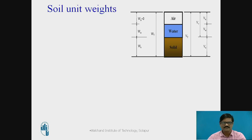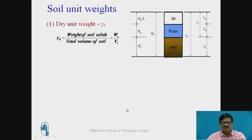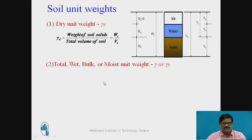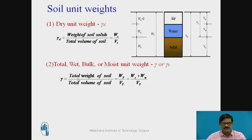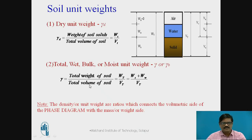Now we have various soil unit weights. With respect to the three-phase system, we can define all these unit weights. The first is dry unit weight, given by the ratio of weight of soil solid divided by total volume of soil — weight of dry soil divided by total volume. The second is the bulk or moist unit weight, represented by gamma or gamma B — bulk unit weight is total weight of soil divided by total volume of soil, that is Wt divided by Vt. It is indicated that density or unit weight are ratios which connect the volumetric side of the phase diagram with the mass or weight side.